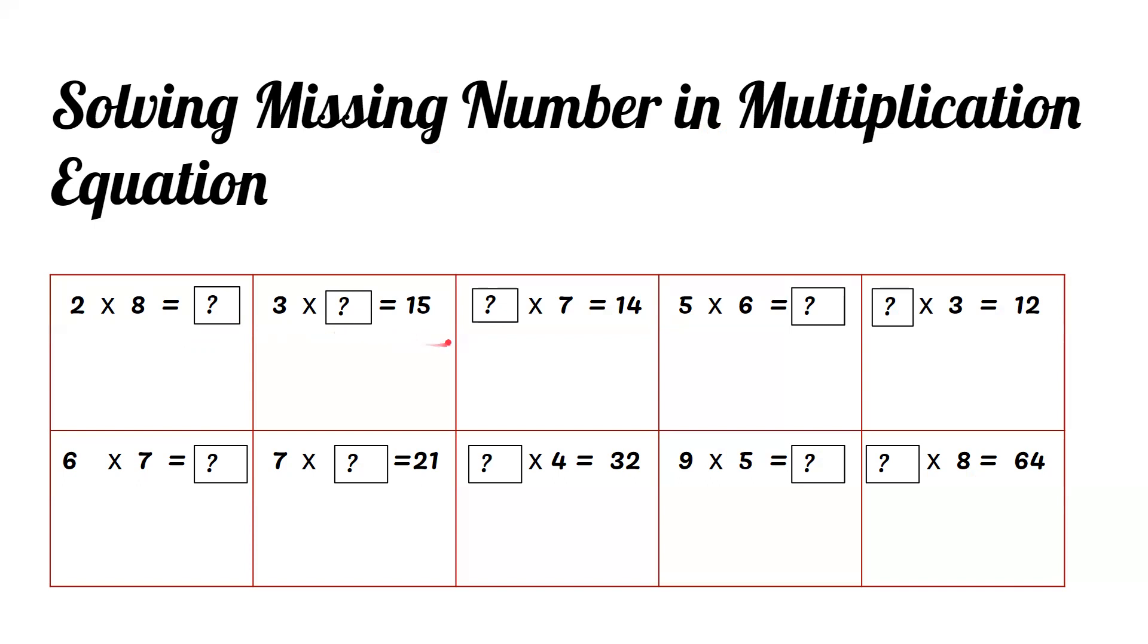7 times what equals 14? 7 ones are 7, 7 twos are 14, so the answer is 2.